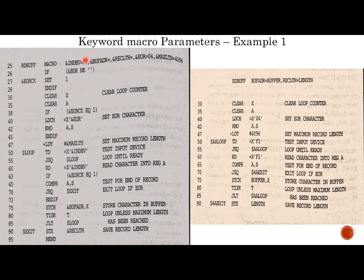Here we have five parameters. F1 is the default value for INDEV — if INDEV is not specified in the macro invocation, it takes the default value F1. The default value of BUFFET is null, RECLTH is null, UR equals 04, and max_length is 4096. So default values of parameters can be specified in the macro prototype using the equal sign. In this invocation, only two arguments are given: buff_adr equals buffer, and rec_lth equals length.